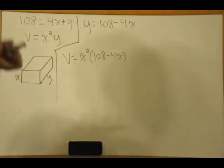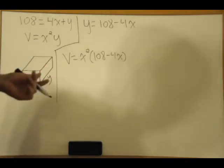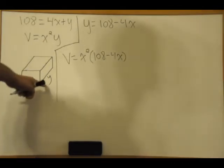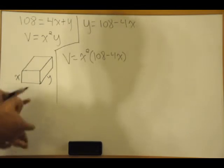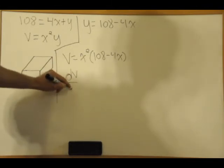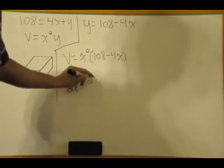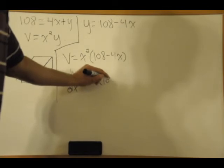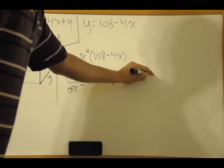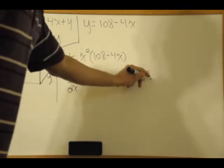So that's x squared multiplied by 108 minus 4x. Now we have it in one variable x. We take the derivative of volume with respect to x to maximize it because we're trying to find critical points for the dimensions of the box. Using the product rule, dV/dx equals 2x multiplied by 108 minus 4x, plus x squared times the derivative, which is minus 4.